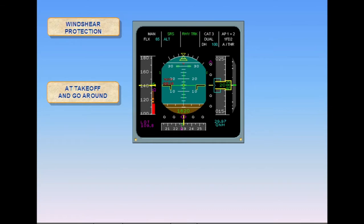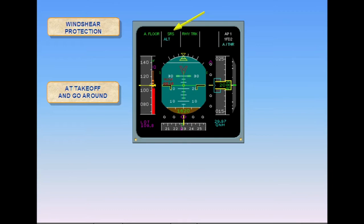Wind shear protection is provided during takeoff and go around when SRS is active. SRS will command a pitch angle which ensures a minimum positive rate of climb, despite a potential speed loss. However, if the angle of attack becomes too high and reaches angle of attack protection, the autopilot, if engaged, trips off. AOA protection allows the pilot to achieve the best angle of attack while preventing the aircraft from stalling. The stick can be pulled all the way back without fear of stalling.